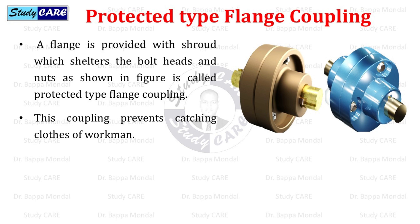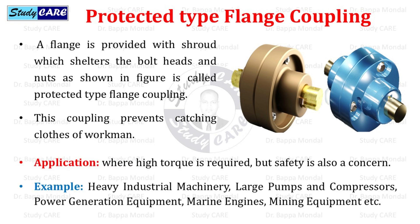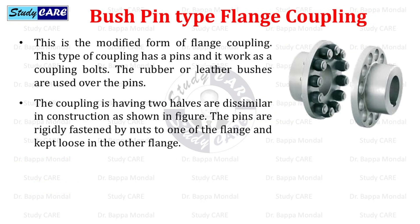In the protected type flange coupling, a flange is provided with a shroud which shelters the bolt heads and nuts, as shown in the figure. This coupling prevents catching the clothes of workmen. These are used where high torque is required but safety is also a concern — for example, heavy industrial machinery, large pumps and compressors, power generation equipment, marine engines, and mining equipment.